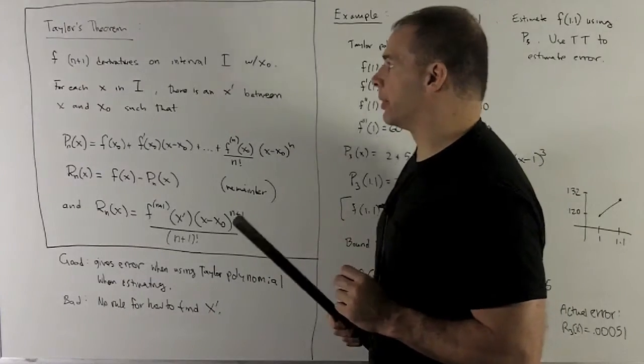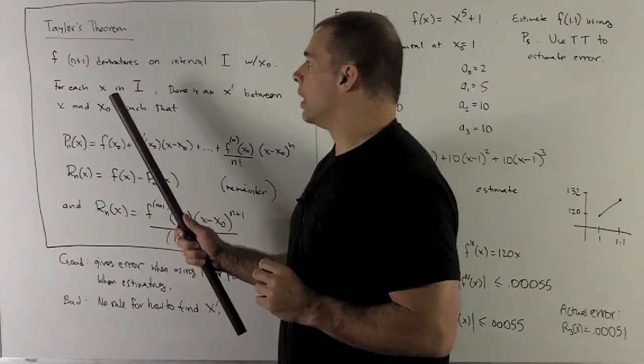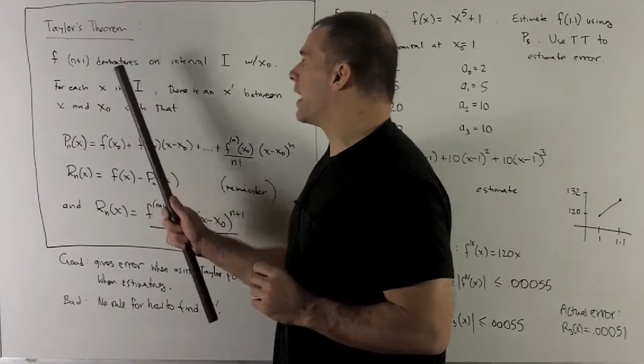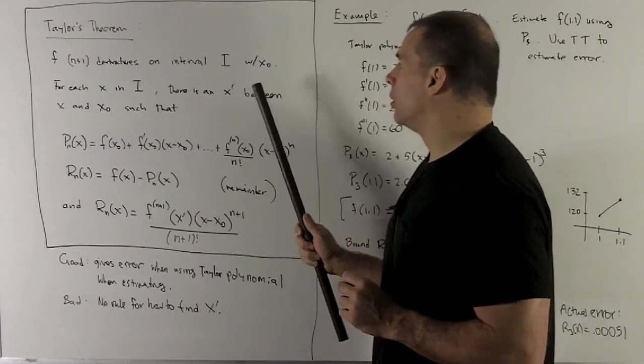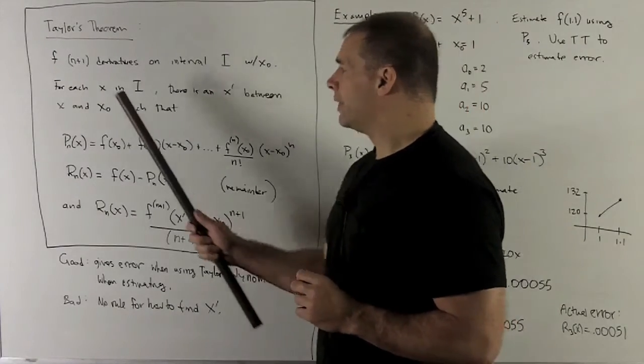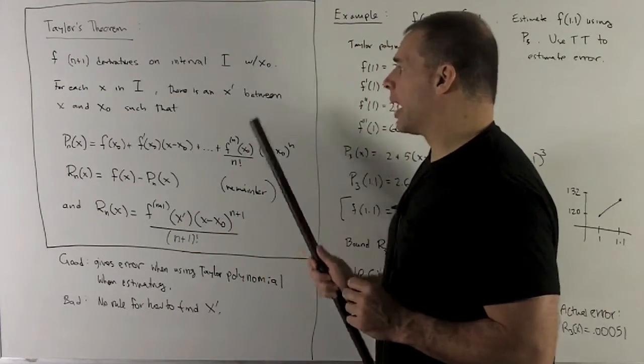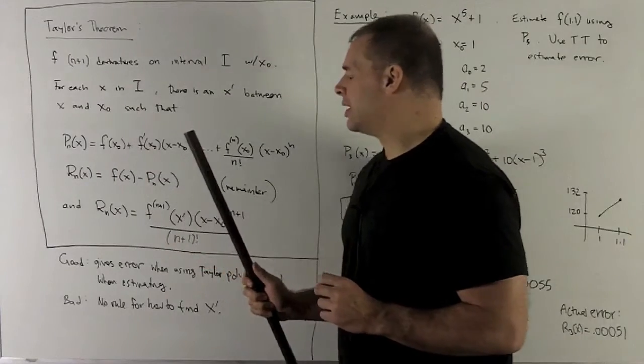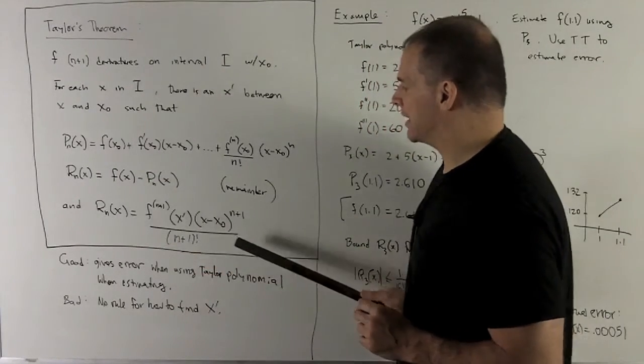What's Taylor's theorem going to say? We're going to have a function f. I'll be able to take n+1 derivatives of f on some interval I, where our center x₀ lives. Then, for each x in this interval, there's going to be an x' between x and x₀, such that...